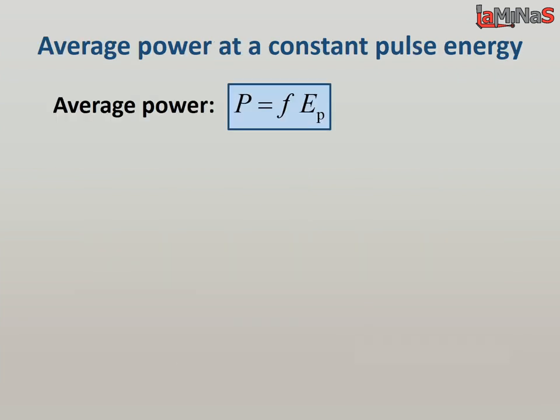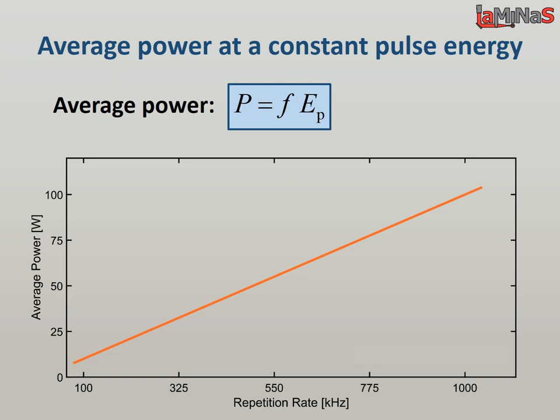At constant pulse energy, the average power increases proportionally to the pulse repetition rate. At a constant pulse energy of 100 microjoules, the average power goes from 10 watts at 100 kilohertz to 100 watts at 1 megahertz.